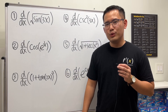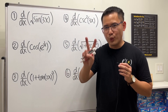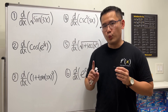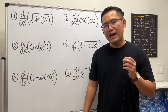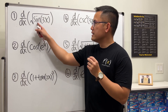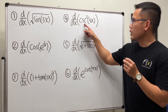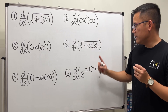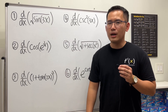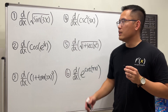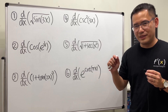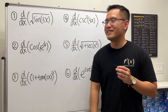I wanted to show you guys how to use the chain rule twice for taking derivatives with trig functions. We have to remember the derivatives for sine, cosine, tangent, cosecant, secant, and cotangent. If you want tips on how to remember these derivatives, I have a video for you in the description — check that out.